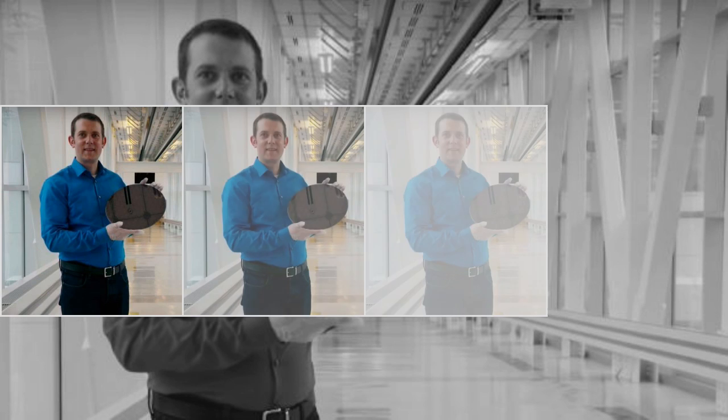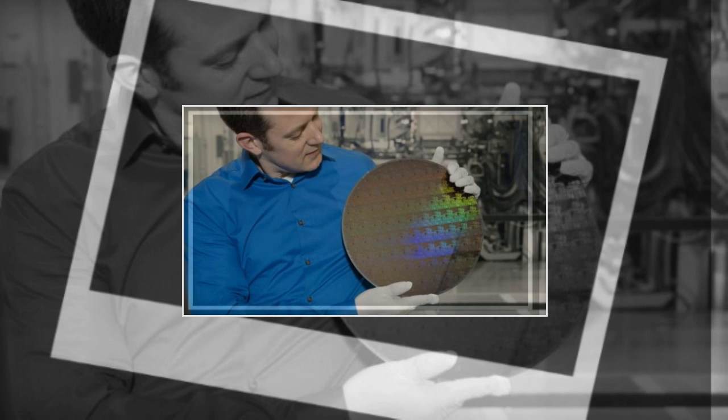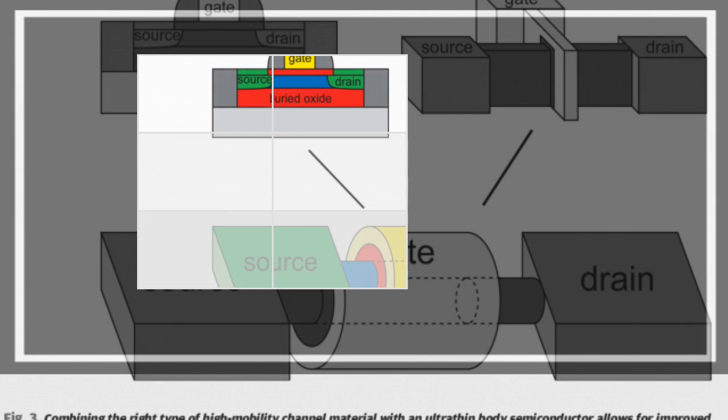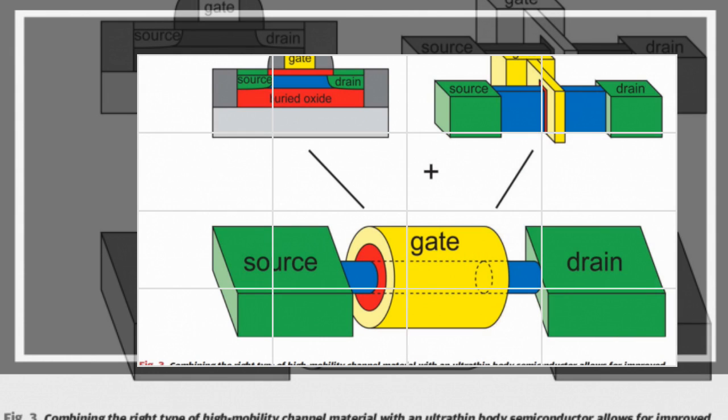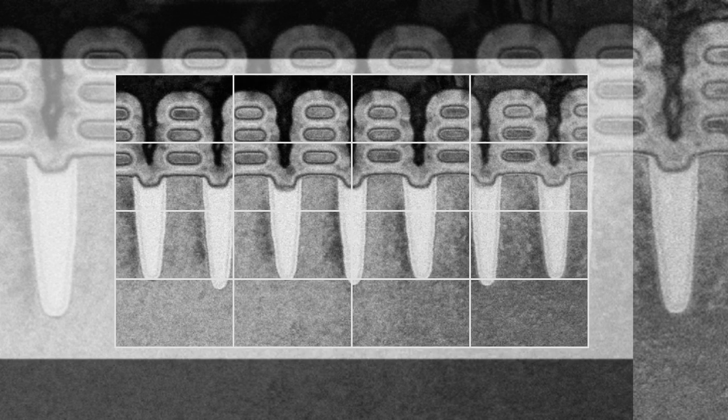IBM researchers announced a new manufacturing breakthrough yesterday that could clear the way to 5 nanometer device scaling and the implementation of next-generation transistor design technologies. The company has used silicon nanosheets, sheets of 2D silicon stacked on top of one another, to assemble a test chip with 30 billion transistors, compared with a 7 nanometer, 20 billion transistor chip the research team debuted several years ago.